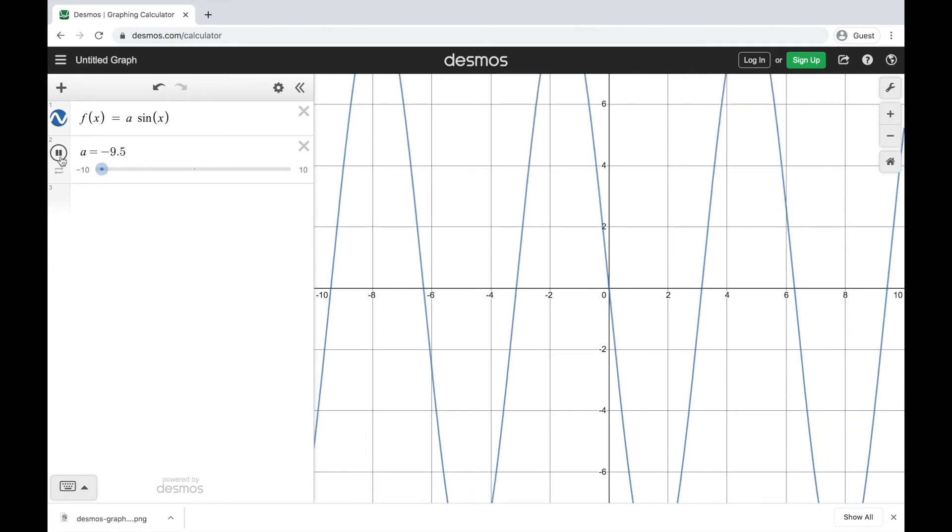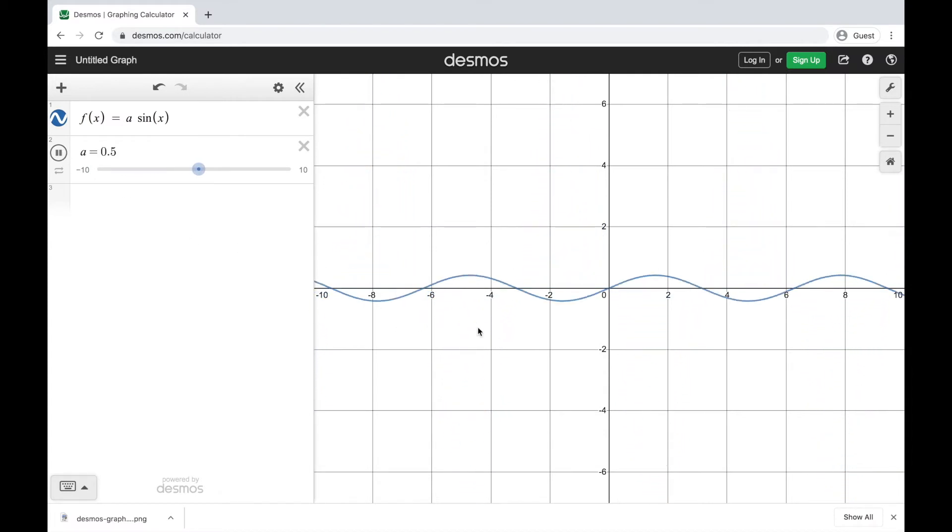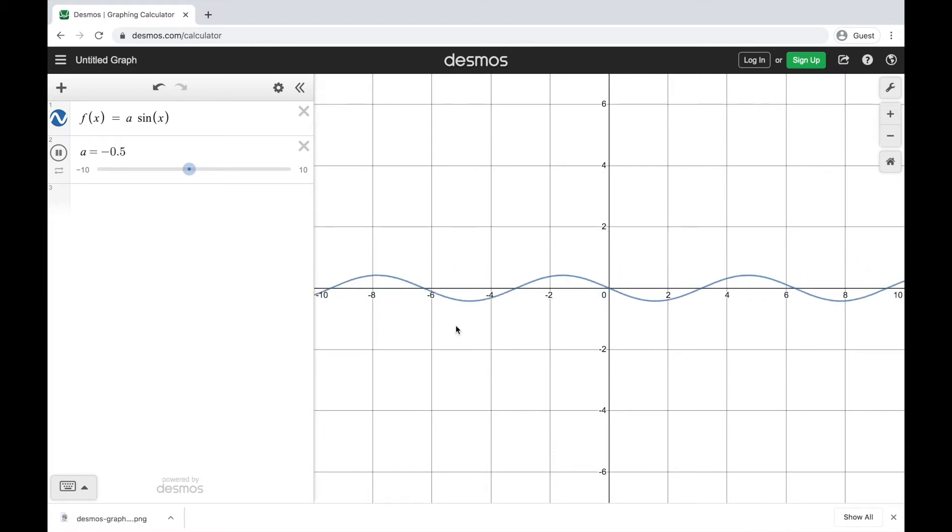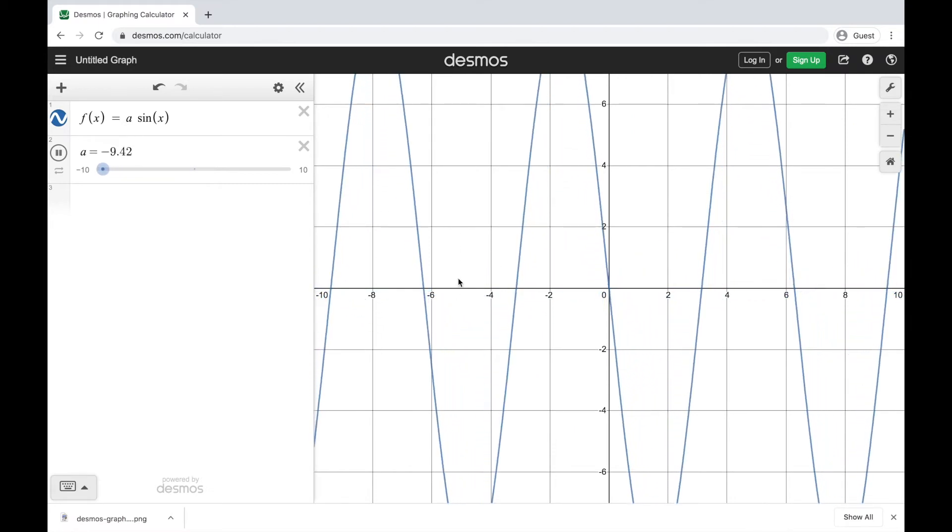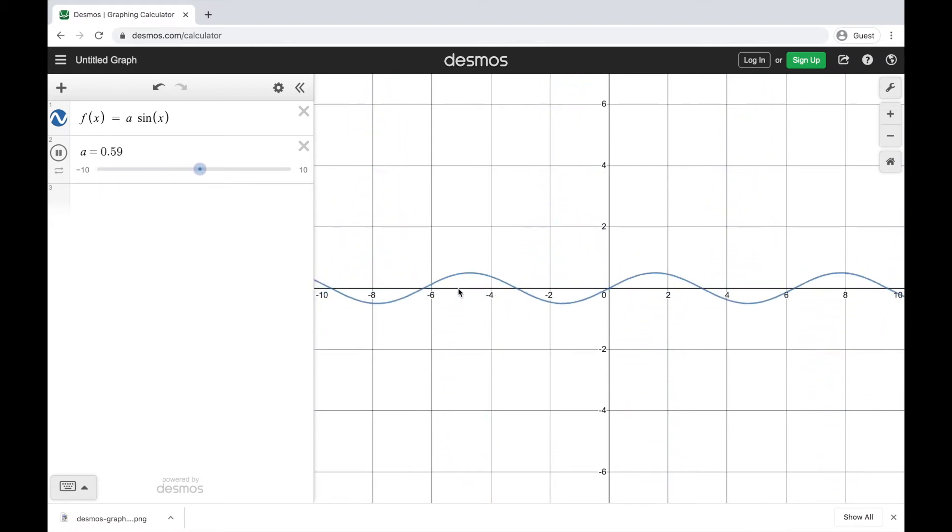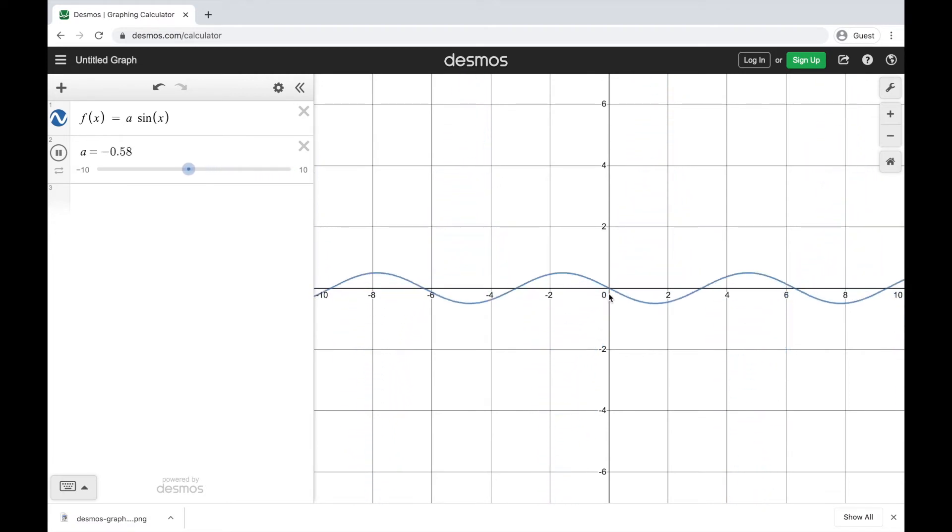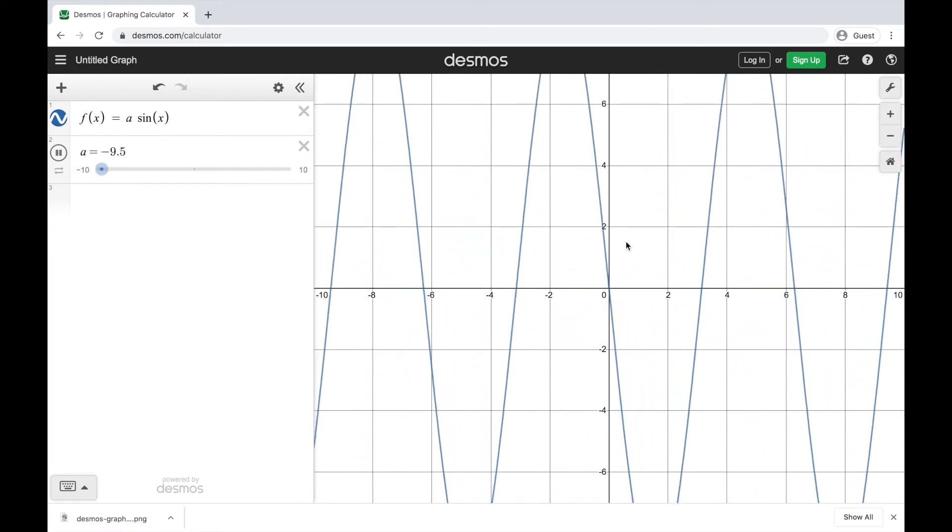So if I let this play, we can see that an absolute value of a being large gives me a large height, a large amplitude. Absolute value of a being small gives me a small amplitude, a very short height. And the negative is going to flip this around the x-axis.